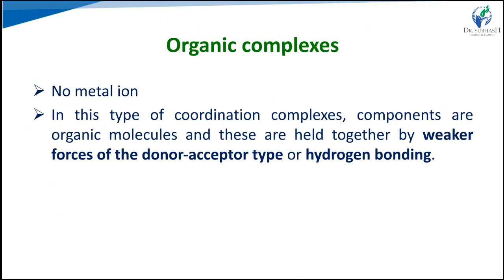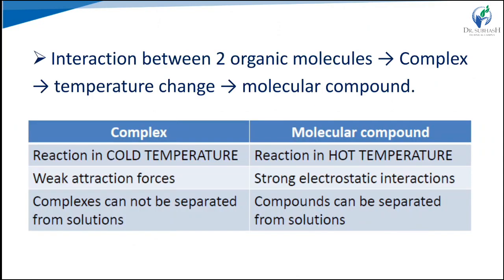The second main type is organic molecular complexes. This type of complex is formed by non-covalent interactions between ligand and molecular substrates, held together by weaker forces such as hydrogen bonding or donor-acceptor type interactions — no metal ions are involved. In cold temperatures, molecular compounds form; in hot temperatures, reactions change. Complexes have weak attraction forces, while molecular compounds have strong electrostatic interactions. Complexes cannot be separated from solution, but molecular compounds can be separated.